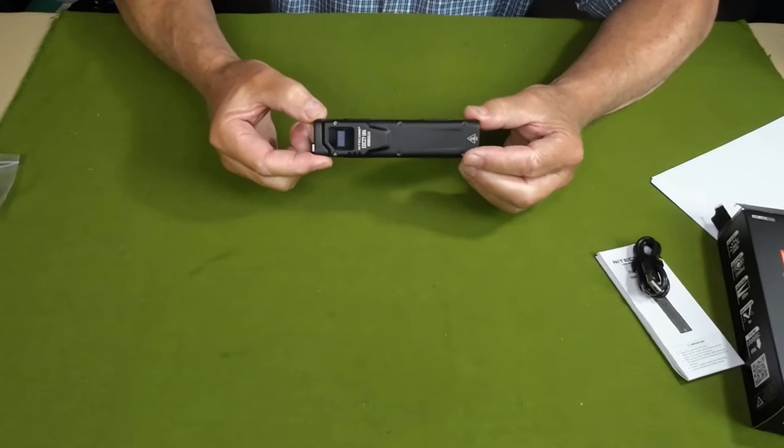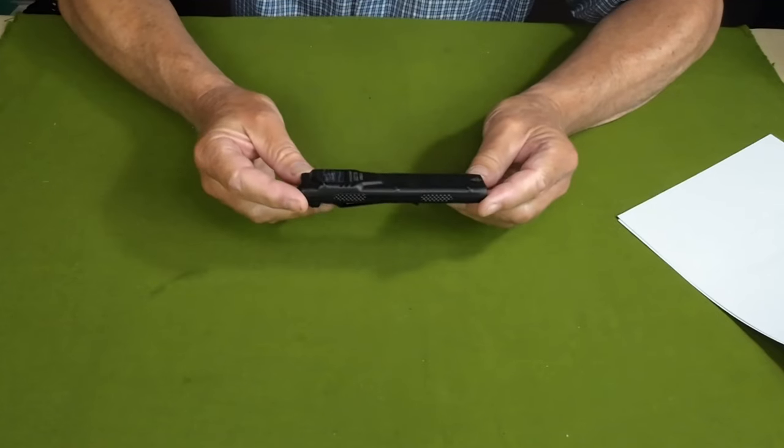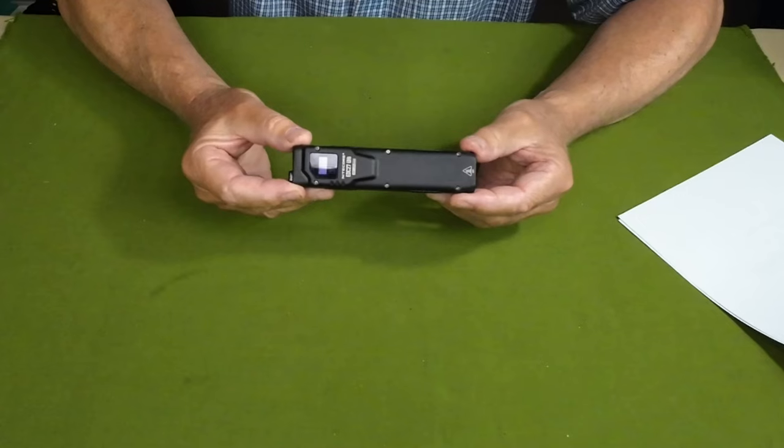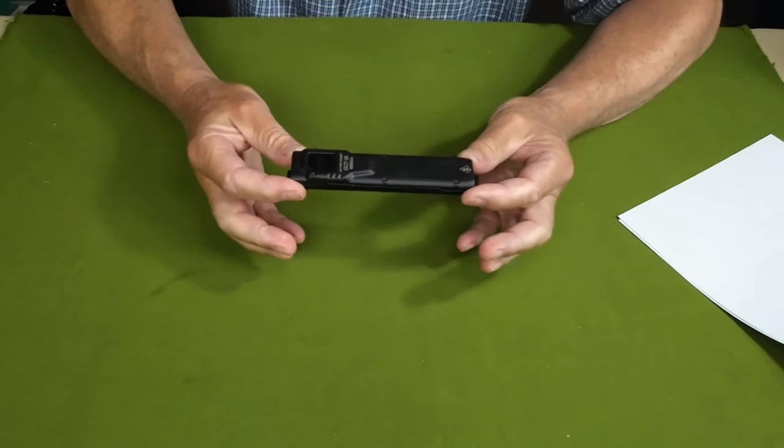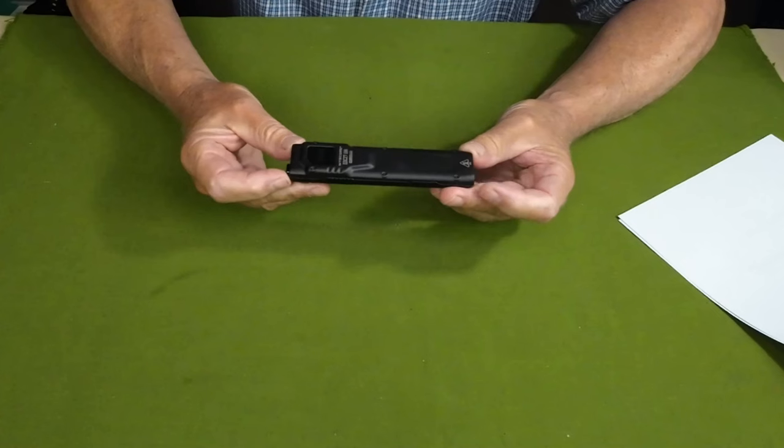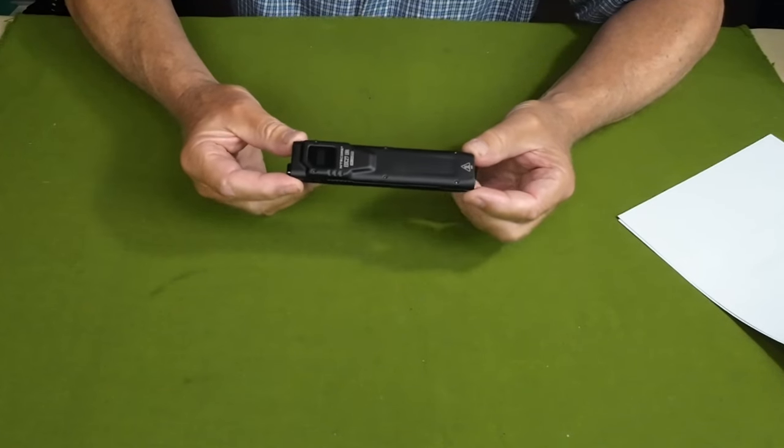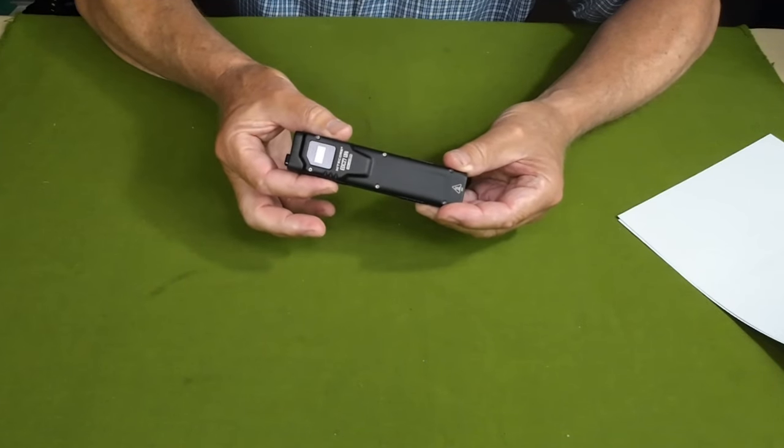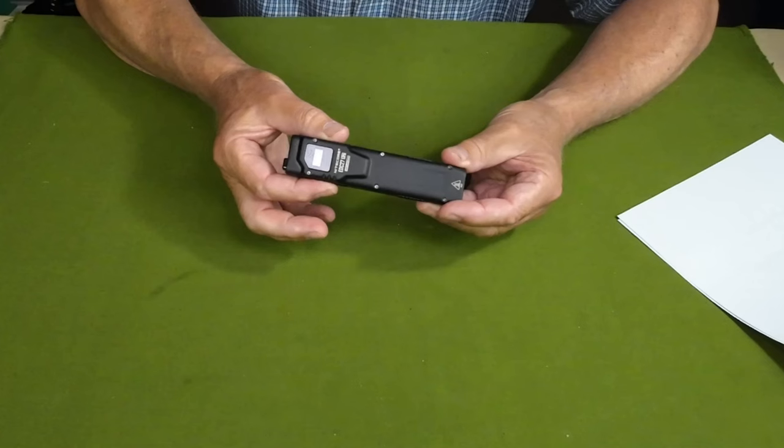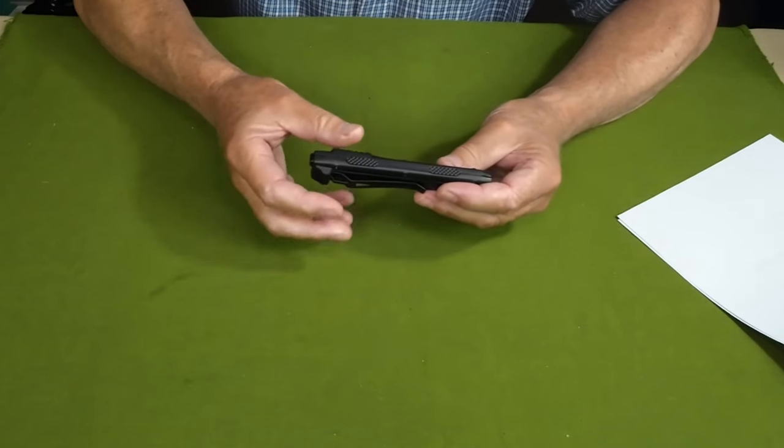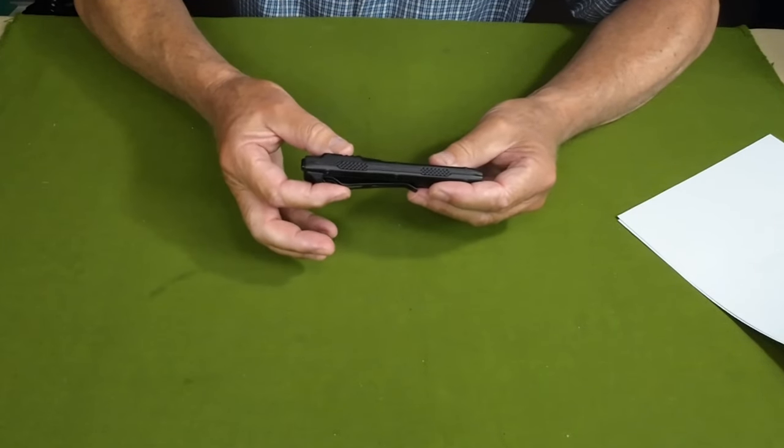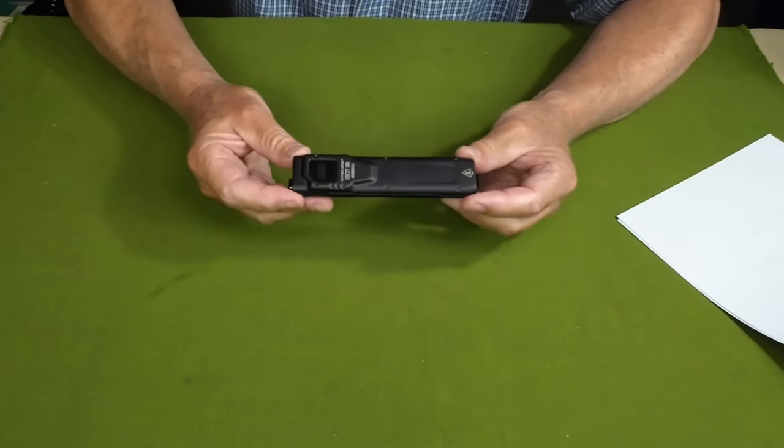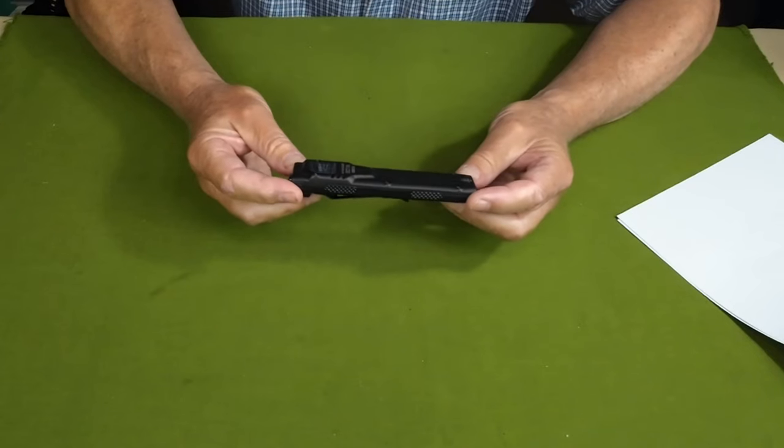It does come with a two-year warranty. I'm going to quickly go through the physical specifications. The overall length is 5.33 inches or 135.3 millimeters. The width at its widest is 1.24 inches or 31.4 millimeters. Its thickness is 0.887 of an inch or 22.2 millimeters. Its weight is 4.3 ounces, 122 grams.